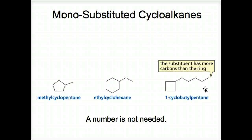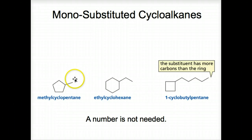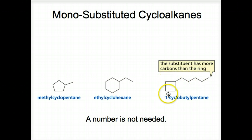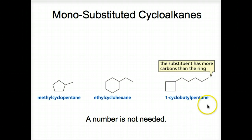Here's a monosubstituted example of cycloalkanes. In this case, a number is not needed — monosubstituted means there's just one substituent. This one here is a methyl group; here is an ethyl group. And this one here is a five-carbon substituent. Since it's five carbons and the cyclobutane ring is only four, we actually name it using the longest chain as the parent name, and name the cyclobutyl as the substituent off of the pentane.